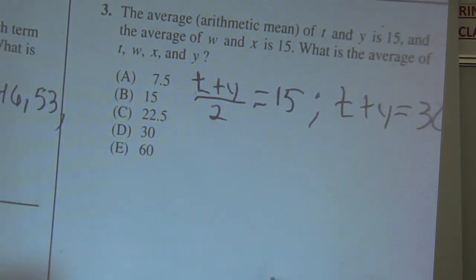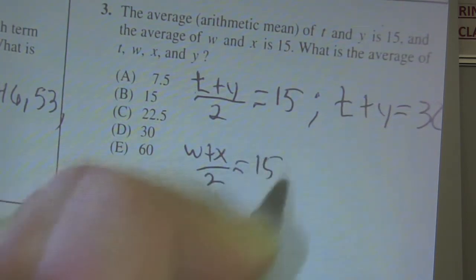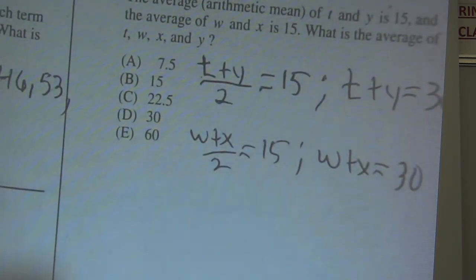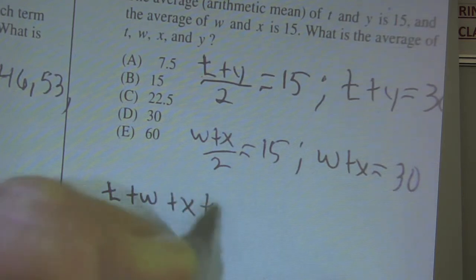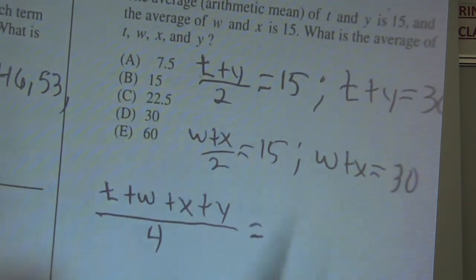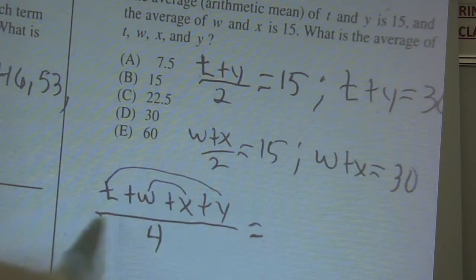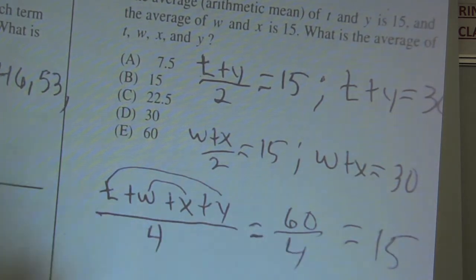Let's do that with W and X: the average of W and X means W plus X over two equals 15, so W plus X equals 30. What's the average of all four numbers added together? T plus W plus X plus Y divided by four — because there are four numbers. That equals T plus Y, which is 30, plus W plus X, which is 30, giving us 60 over four, which is 15. Choice B.